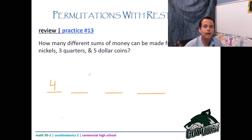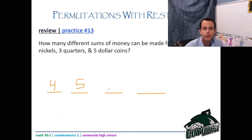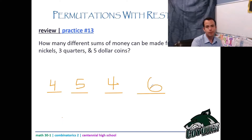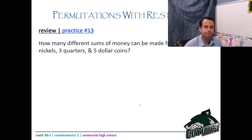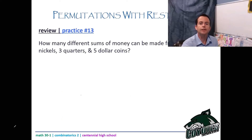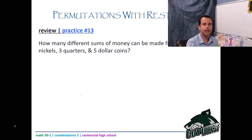Likewise, we have five options for nickels because we had four nickels, four options for the quarters, and six options for the dollars. When we multiply all that together — four times five times four times six — we get 480.